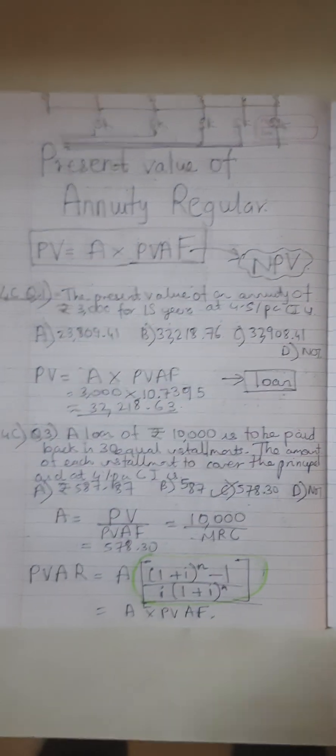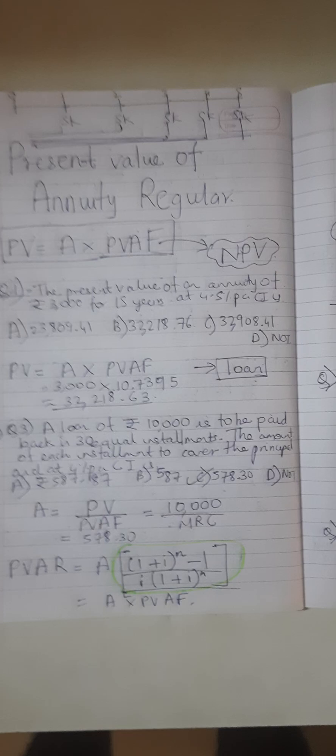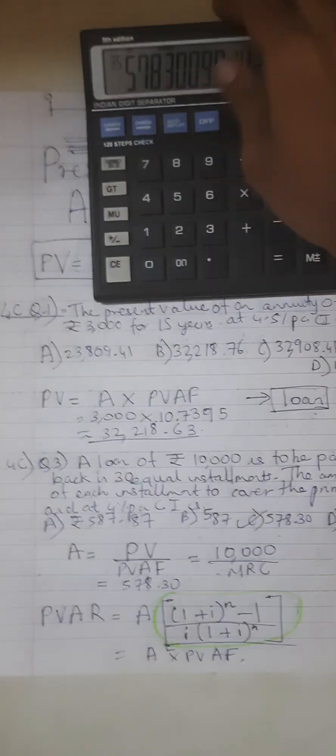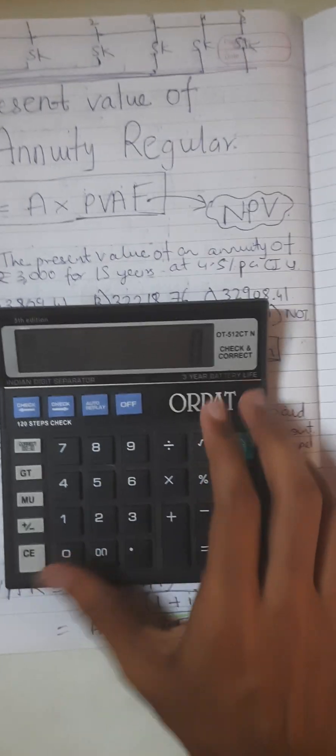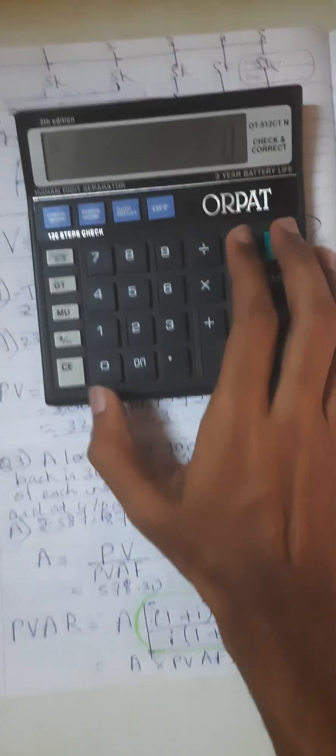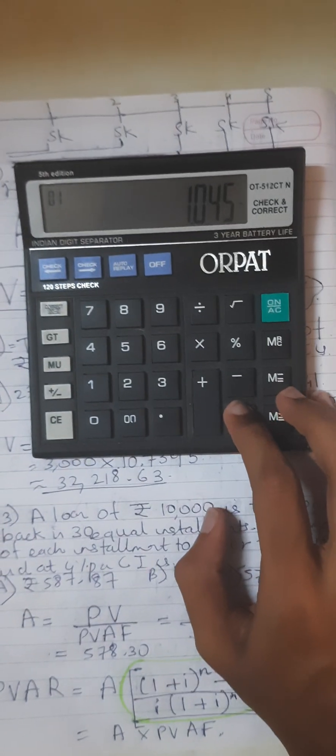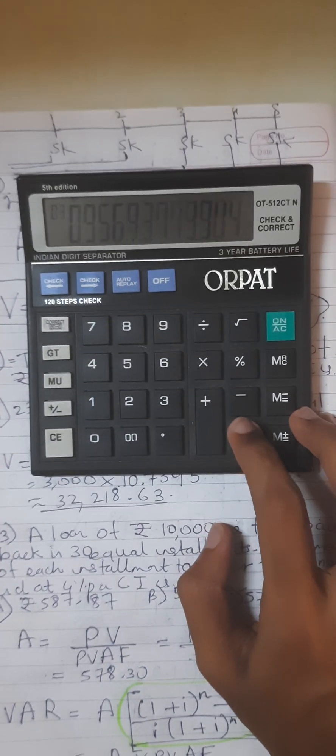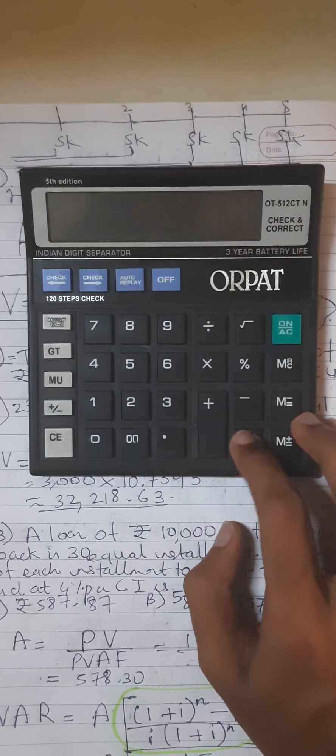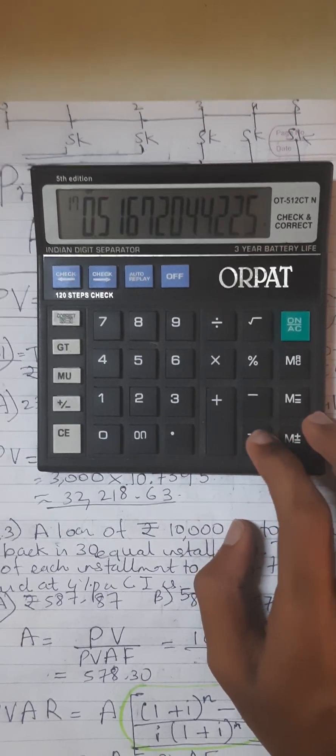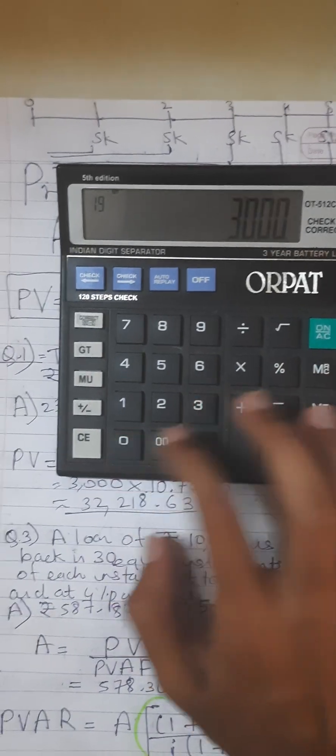Let's move on to the first question. Present value of an annuity of rupees 3000 for 15 years at 4.5% interest per annum compounded. So this is 1.045 divided by, press equal to 15 times, then press GT, multiplied by 3000. That gives us an answer of 32,218.63.